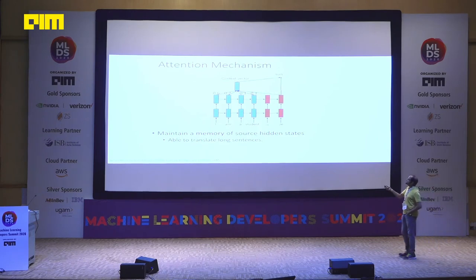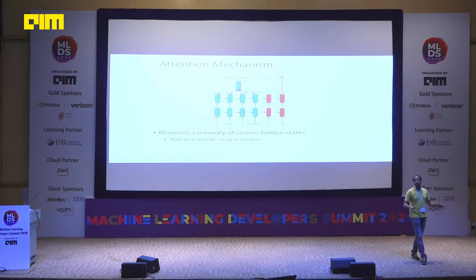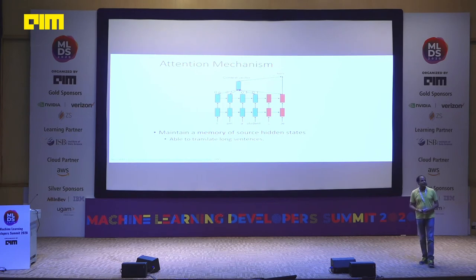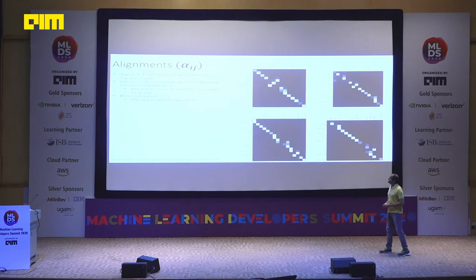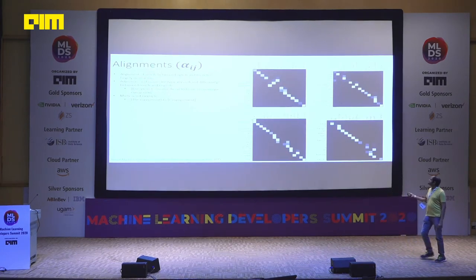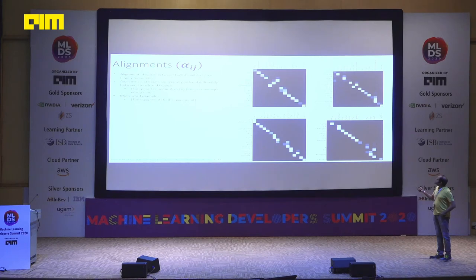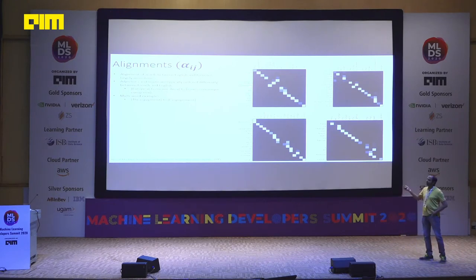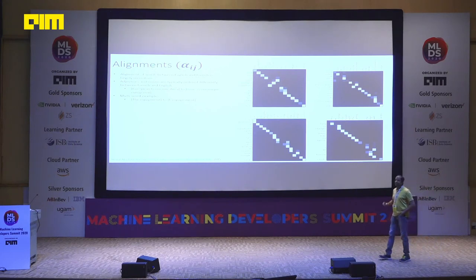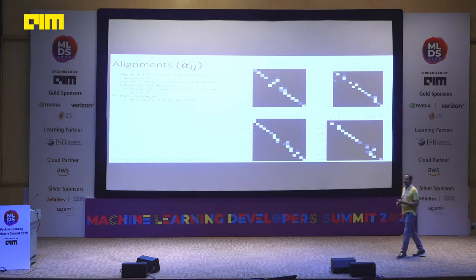These are called attentional models because they know which parts of the input should be paid attention to and to what extent. They lead to very good translations and can handle word-order differences — for example, 'European economic area' in English correctly becomes 'zone économique européen' in French. Attention models typically give 2-3% gains over non-attentional NLP models.